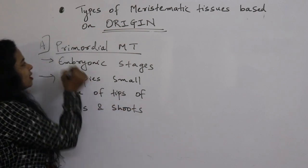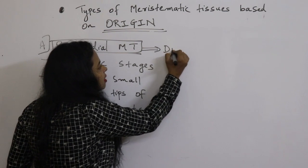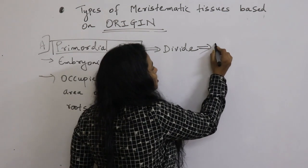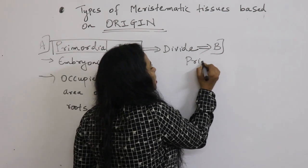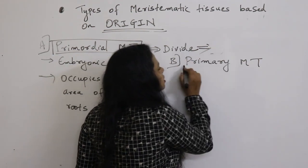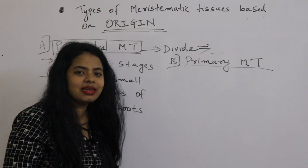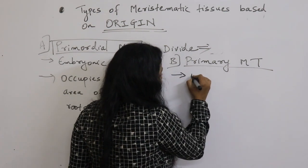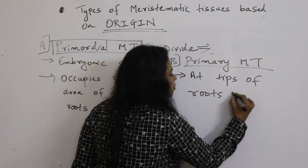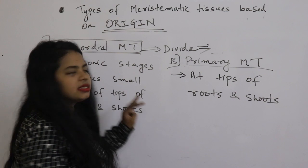If we consider primordial meristematic tissue, it will divide and form the second type — that is primary meristematic tissue. So this primary meristematic tissue is formed by the division of primordial meristematic tissue. It is present at the tips of roots and shoots, and it arises from the primordial meristematic tissue.